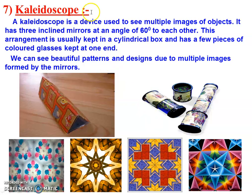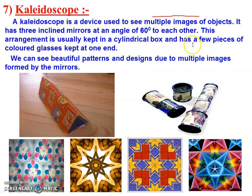Now we are going to discuss the kaleidoscope. The kaleidoscope is a device used to see multiple images of an object. It has three inclined mirrors at 60 degrees to each other. This arrangement is usually kept in a cylindrical box and has a few pieces of colored glass kept at one end.